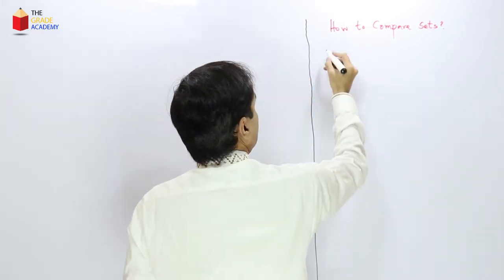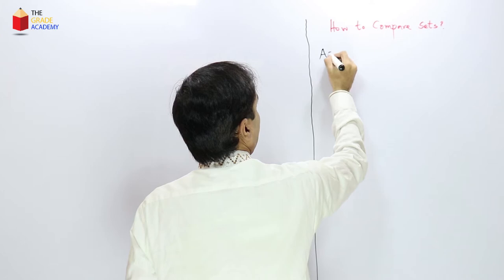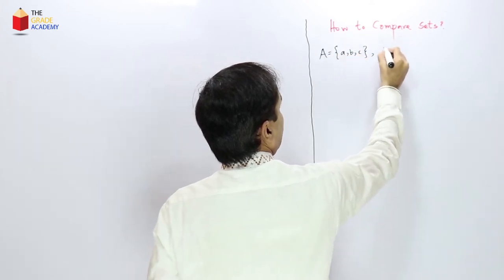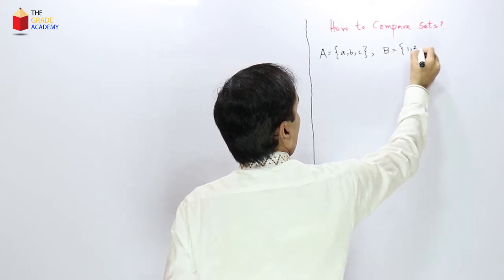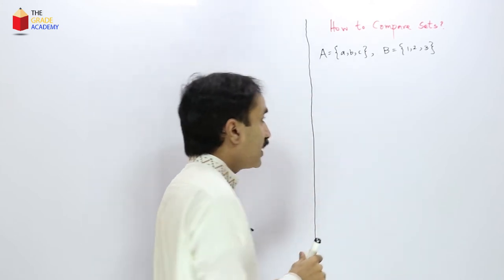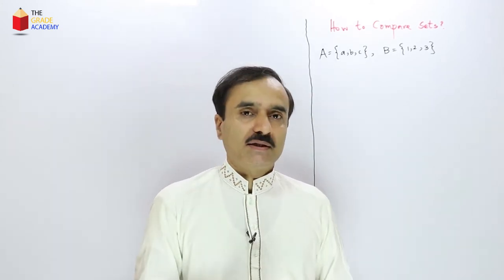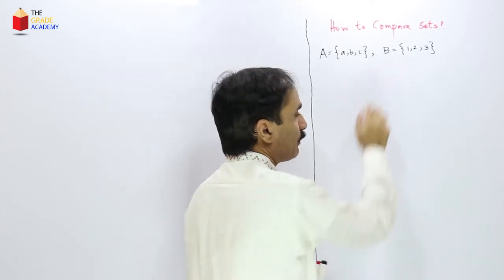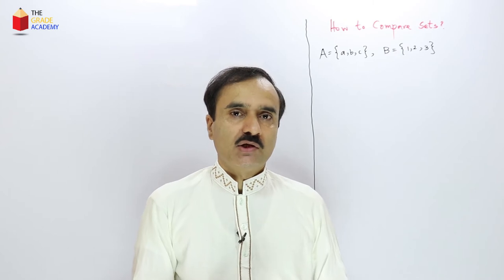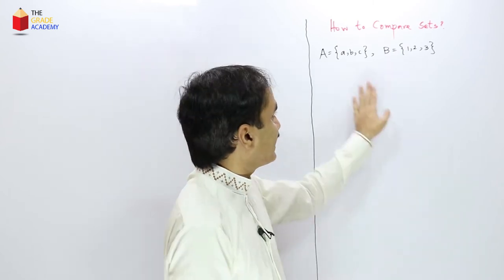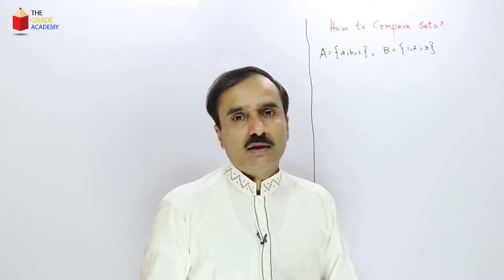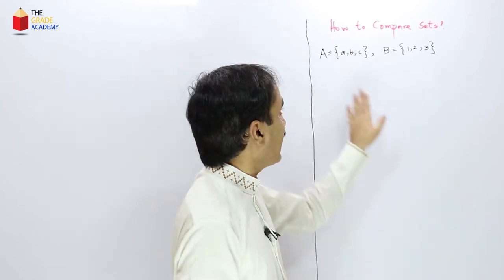Let us consider two sets. Suppose we have a set A with elements A, B, and C, and we have another set with elements 1, 2, and 3. Here we are going to compare these two sets. Which thing do you see in common in both of these two sets? You can see that both of the sets have the same number of elements. We can also say that set A and set B have the same size.